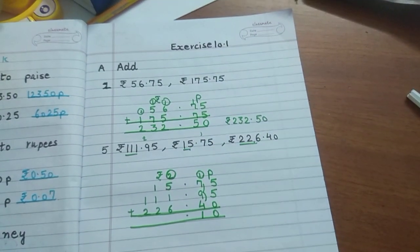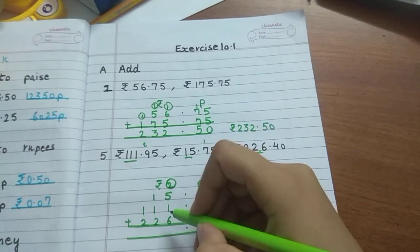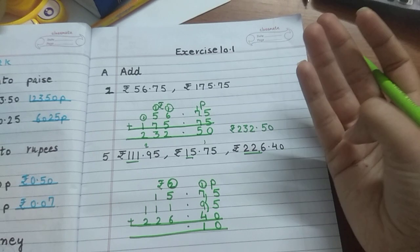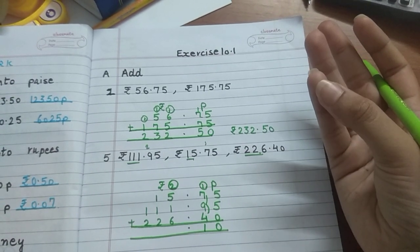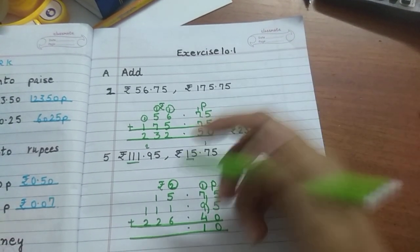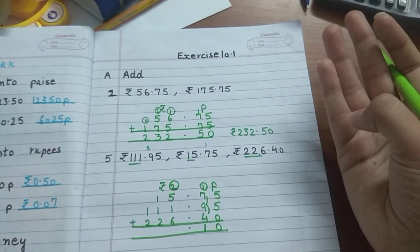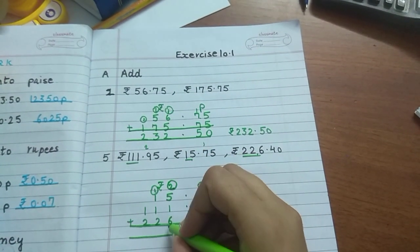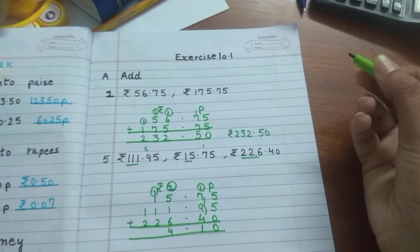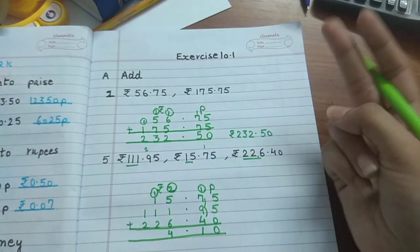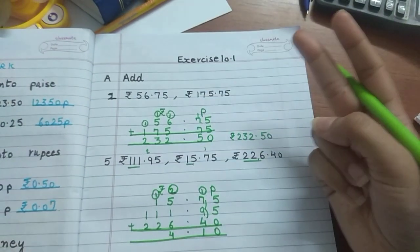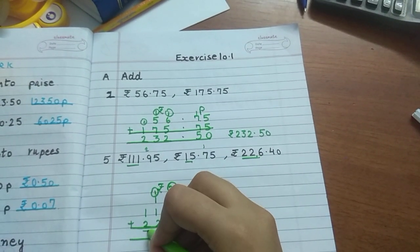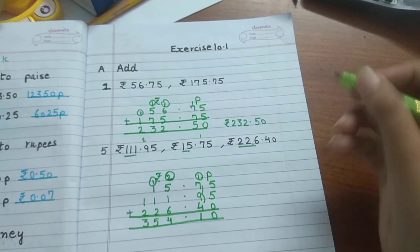Don't forget the carry over. 5 plus 1 is 6. 6 plus 6, count after 6: 7, 8, 9, 10, 11, 12. 12 plus 2 is 13, 14. So 1 up, 4 down. 1 plus 1 is 2. 2 plus 2: 3, 4. Plus 1 is 5. 1 and 2 is 3. So what is the answer? Rupees 354 and 10 paise.